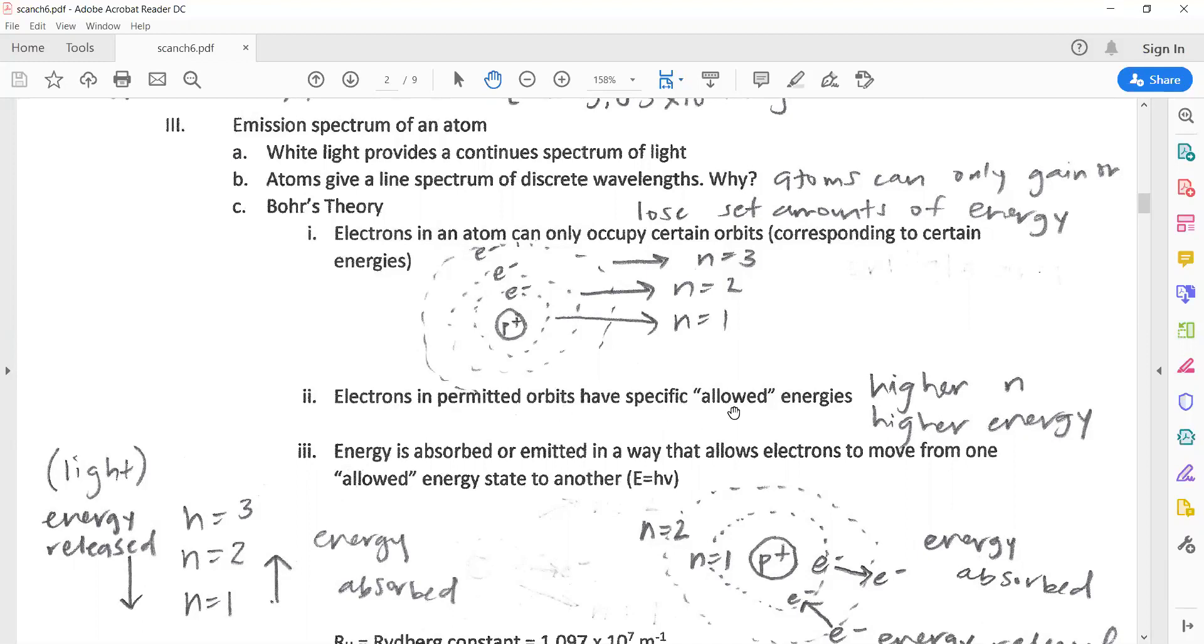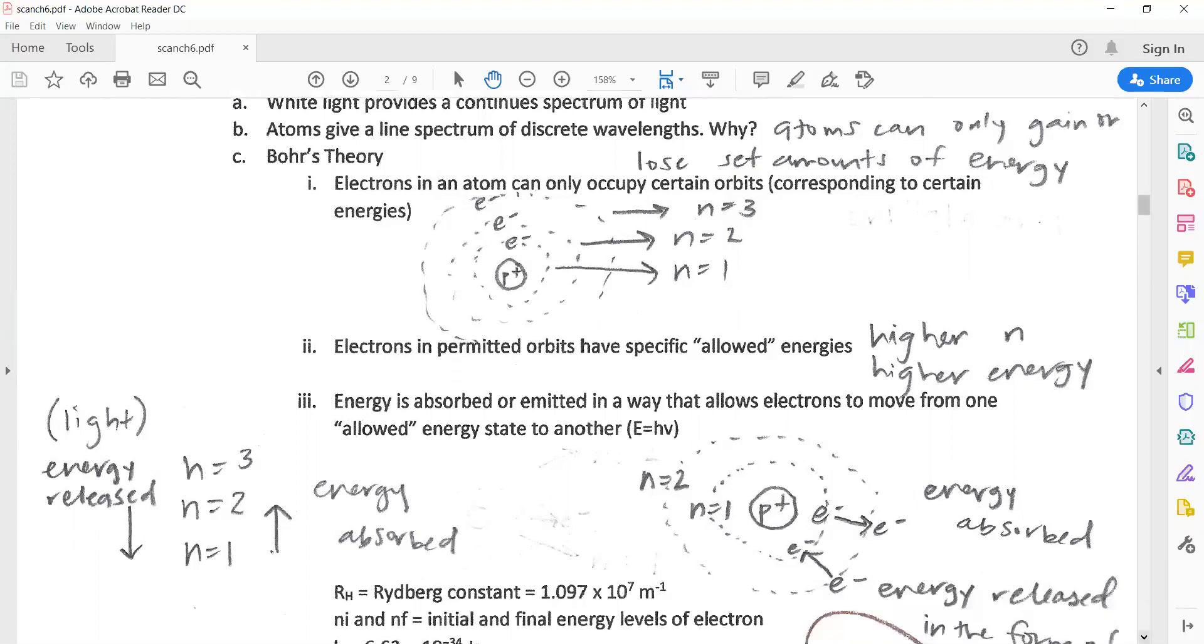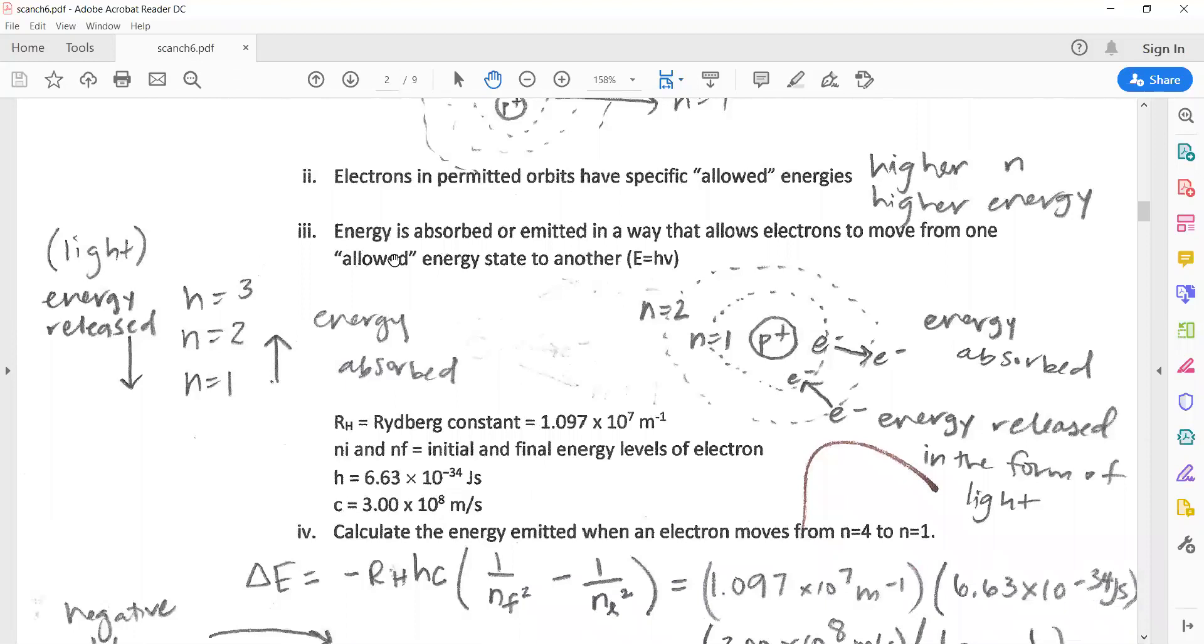Electrons in permitted orbits have specific allowed energies, so the higher the n value, the further you are from the nucleus, the higher the energy of those electrons. As electrons jump around, the atom is gaining and losing energy. If an electron, for example in hydrogen which only has one electron, typically rests closest to the nucleus. If the hydrogen atom is given extra energy, the electron will jump out one or two or three levels and that's energy being absorbed. The atom doesn't want to stay like that, so the electron will go back down, and as it comes back down close to the nucleus that's when energy is released in the form of light, which gives you different wavelengths based on the amount of energy.